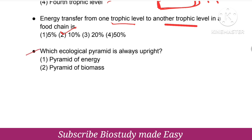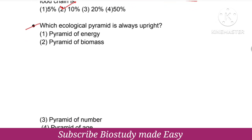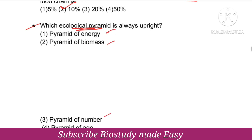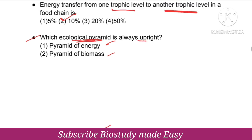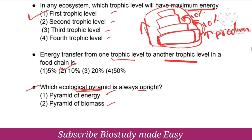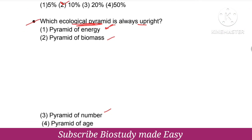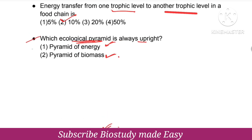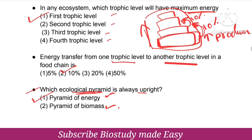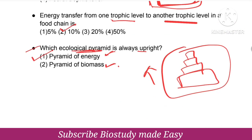Which ecological pyramid is always upright? We have three types: energy, biomass, and number. Age and number pyramids can be inverted, biomass can be inverted, but the pyramid of energy is always upright. At the first trophic level, producers have maximum energy, so energy pyramid is always upright.